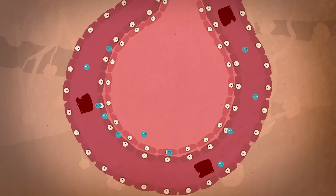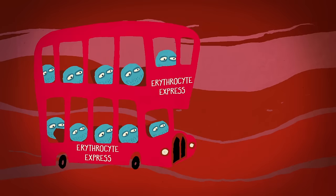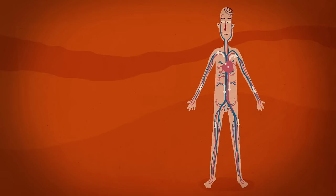The alveolar walls are made of extremely thin, flat cells that are surrounded by capillaries. Together, the alveolar wall and capillaries make a two-cell-thick membrane that brings blood and oxygen close enough for diffusion.